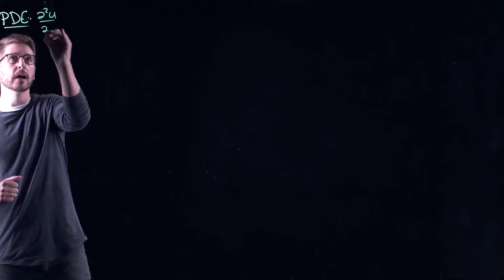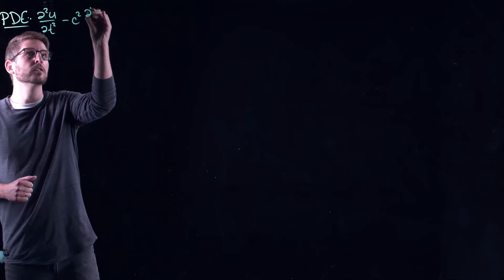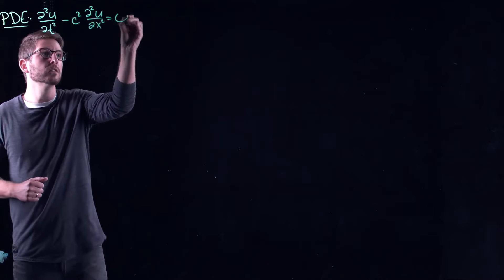So, for example, let's look at the wave equation again. Our usual starting point for now: partial squared u partial t squared minus c squared partial squared u partial x squared equals zero.